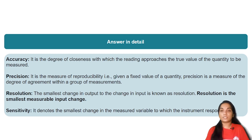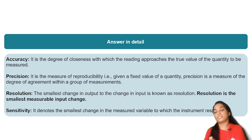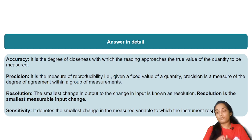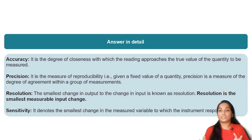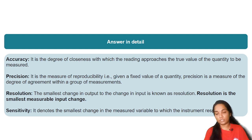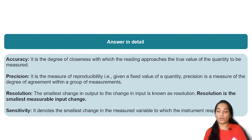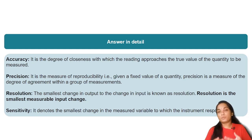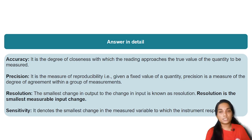Precision is the measure of reproducibility. For a given set of fixed values of a quantity, a group of values represents the degree of agreement within the group. Precision is the measure of the degree of agreement within the group of measured values.